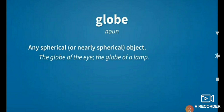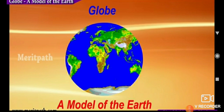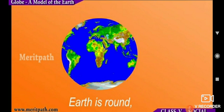First one is globe. Any spherical object — the globe of the eye, the globe of a lamp — any spherical object. A globe is a model of the earth. What is the globe? The globe is a model of the earth.